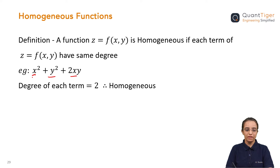Here is an example of homogeneity: x² + y² + 2xy. If you look at the degree of each term, it is 2. So that is the reason we can say that it is a homogeneous function.